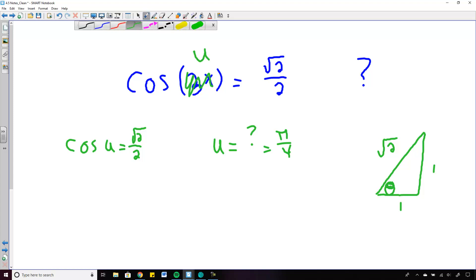So if that's the case, if u was pi over 4, now we go back to this right here, this 3x. So then 3x was equal to pi over 4, and that means that x was equal to pi over 12. This is a review from precalc.